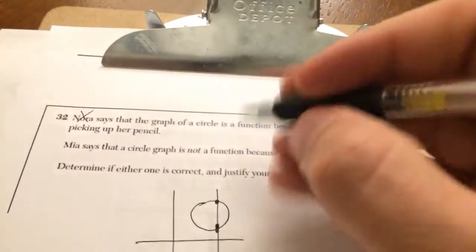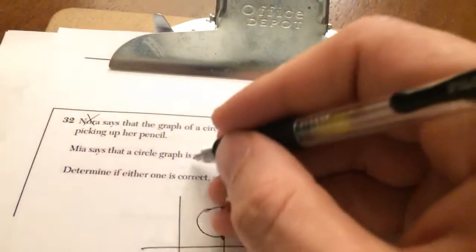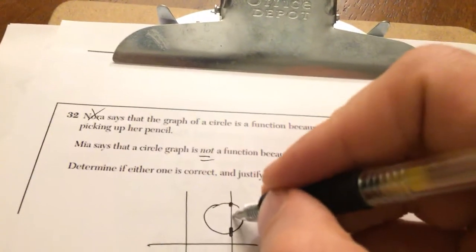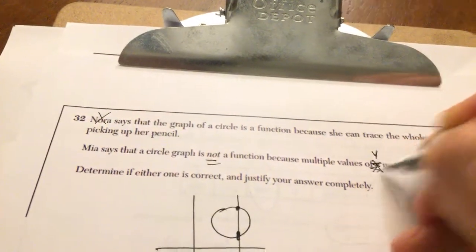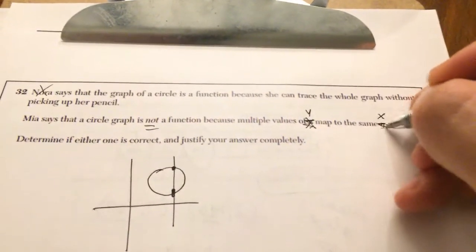Mia says that a circle graph is not a function because multiple values of X map to the same Y. She's kind of correct, but if it's not a function, it's because multiple Y values map to the same X value. That one would be true.